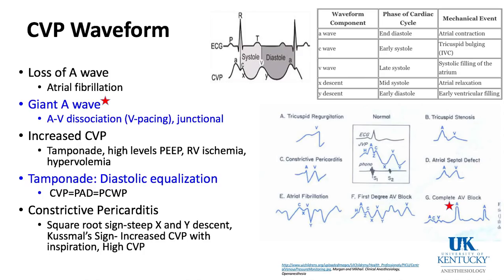High CVP can occur with cardiac tamponade, high PEEP levels of 10–20, right-sided ischemia or failure, and hypervolemia. With tamponade, think of the heart having a big bag of fluid around it such that during diastole all the pressures in the heart equalize — the CVP, pulmonary diastolic pressure, and wedge pressure. For example, a CVP of 21, PAD of 20, and wedge of 22 would be consistent with tamponade physiology: equalization of diastolic pressures.